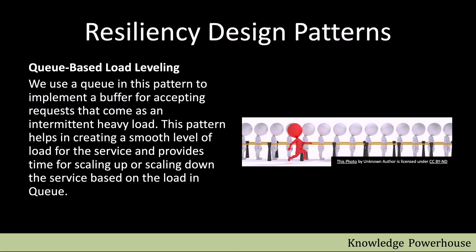Another resiliency design pattern is queue-based load leveling. When a lot of traffic arrives, we implement a queue mechanism — a buffer in which we keep accepting heavy incoming requests. Downstream services then process these requests in order from the queue, so they are not bombarded by heavy traffic. This buffer creates a smooth, even load for the service and also provides time to scale up or scale down based on the queue load, improving both resiliency and overall system performance.